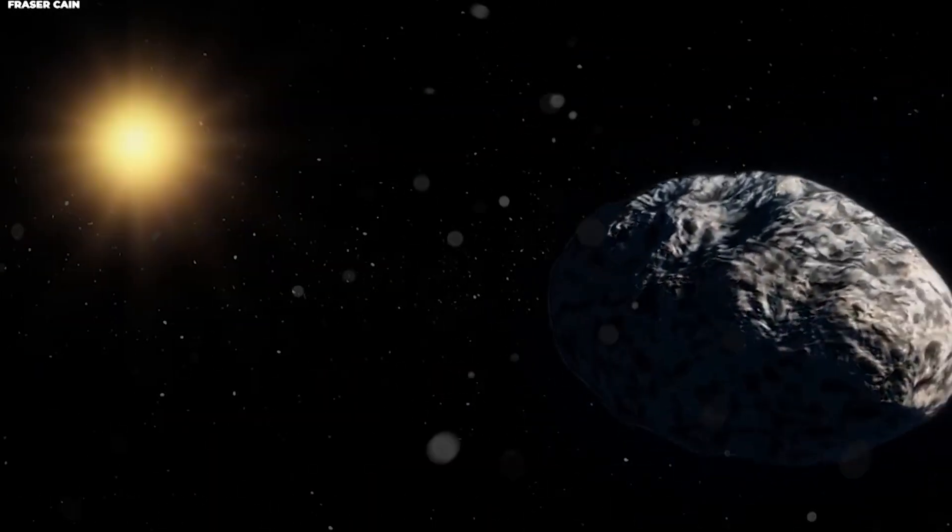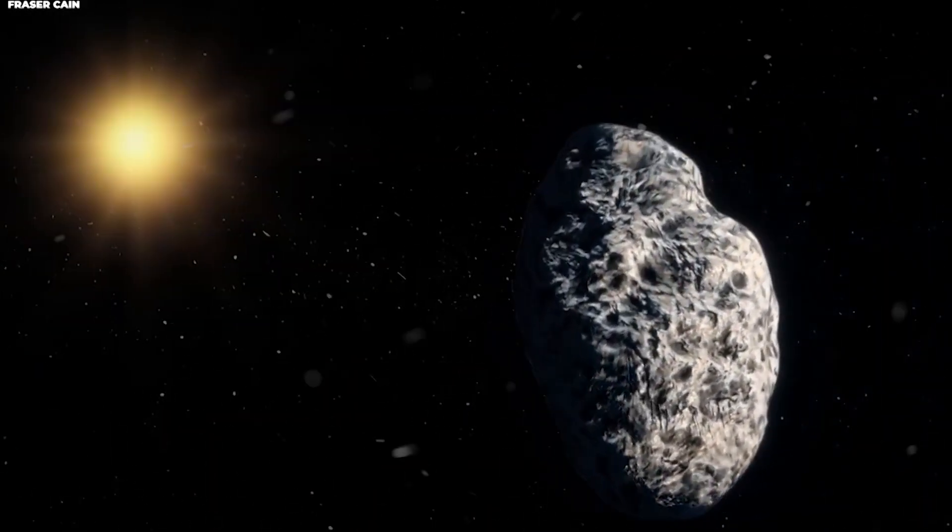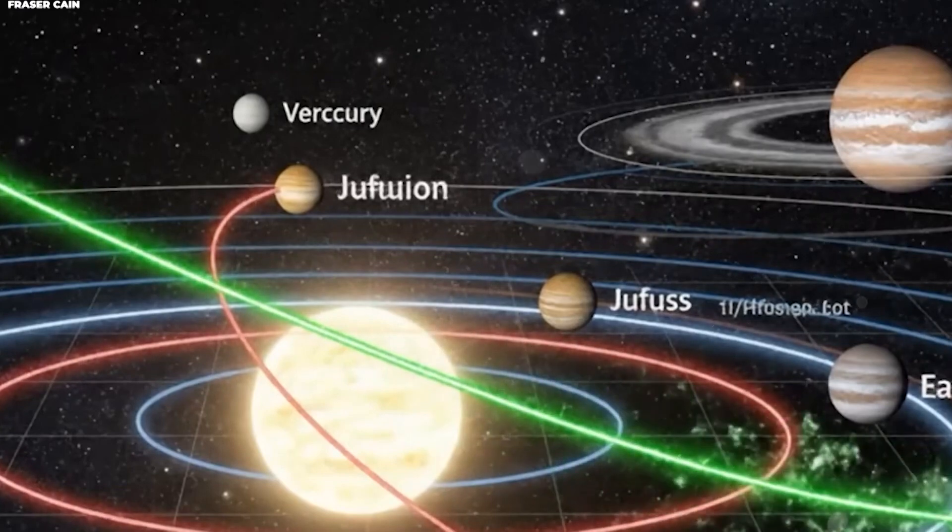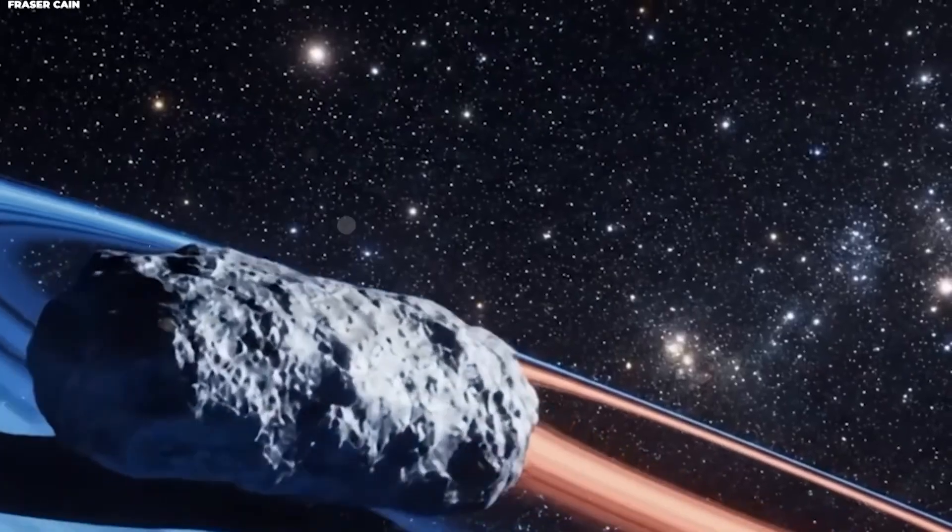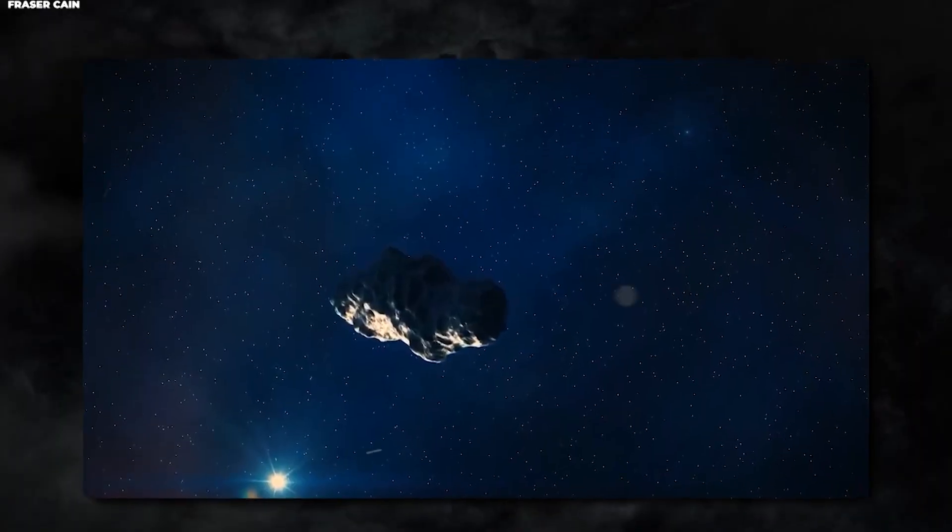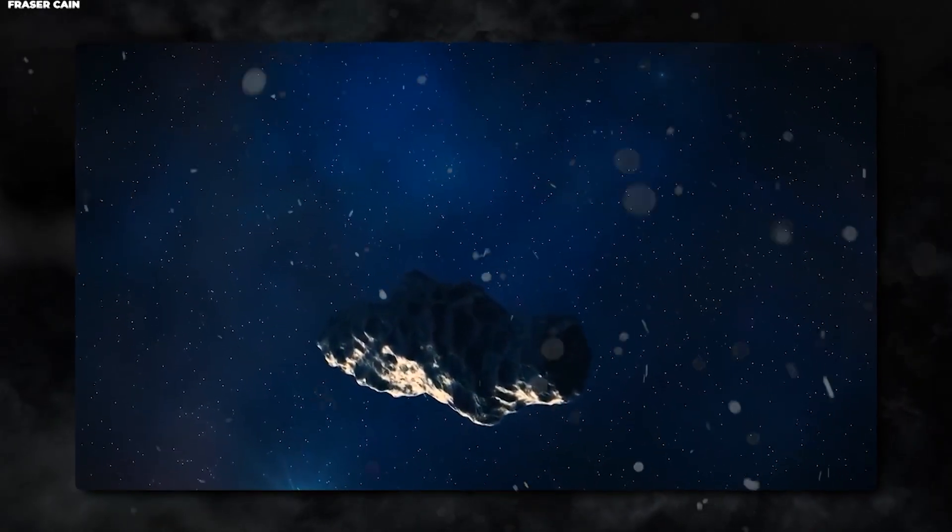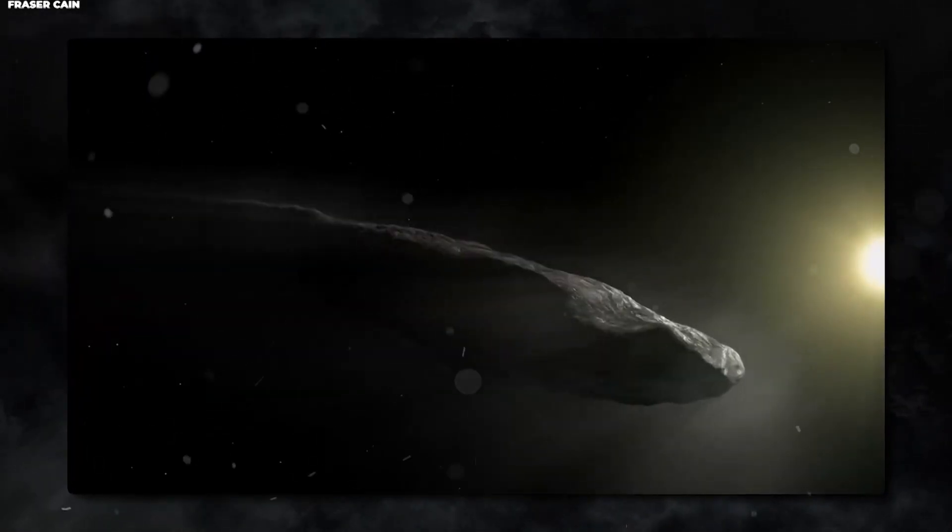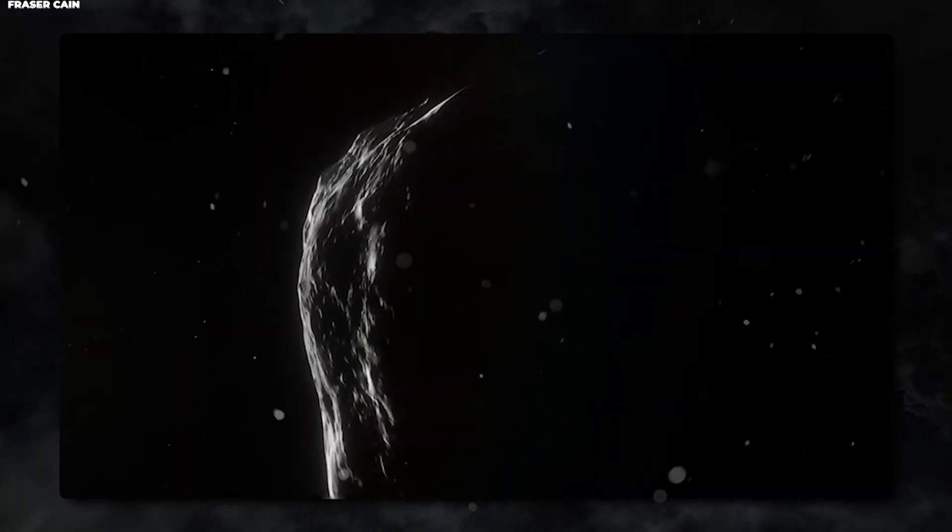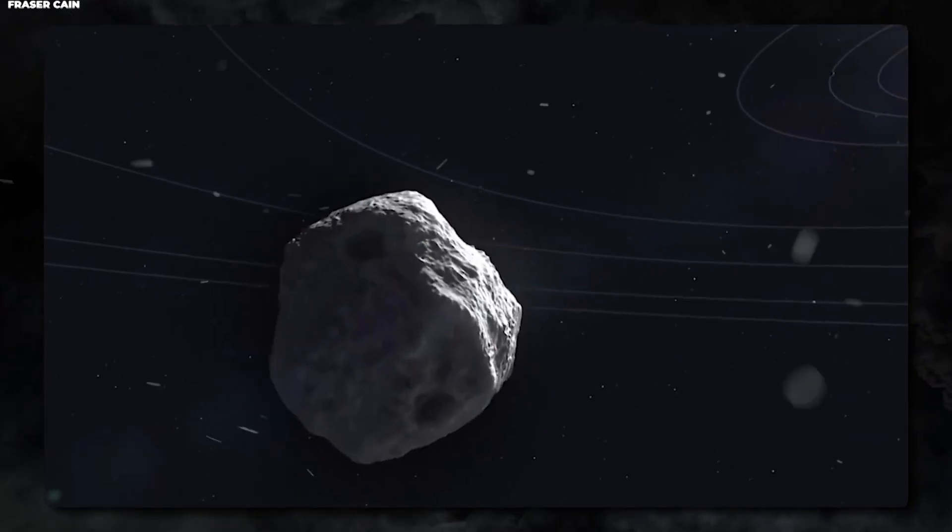The fact that Borisov fragmented while passing through our solar system was extraordinarily lucky from a scientific perspective. This wasn't supposed to happen, or at least the odds of astronomers witnessing it were incredibly low. Yet it did, giving scientists an unprecedented look inside an interstellar object.